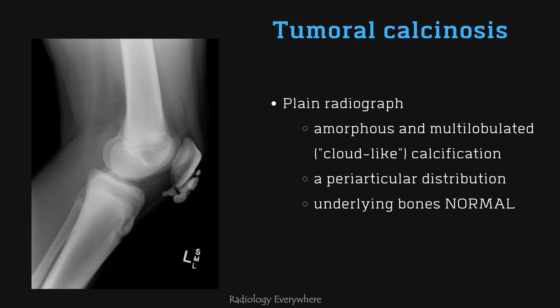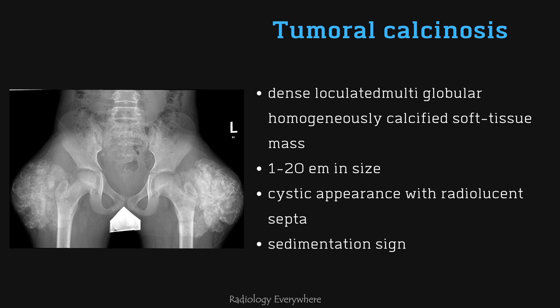On plain radiograph of tumoral calcinosis, there is a typical appearance with amorphous and multilobulated, or cloud-like, calcification located in periarticular distribution. You can see dense, loculated, multilobular, homogeneously calcified soft tissue masses of 1 to 20 cm in size, with cystic appearance and radiolucent septa. You can also see the sedimentation sign, which represents fluid-fluid levels with milk of calcium consistency.